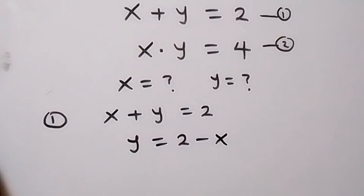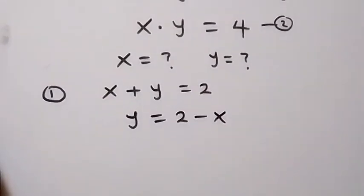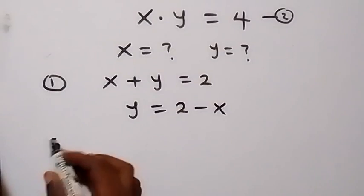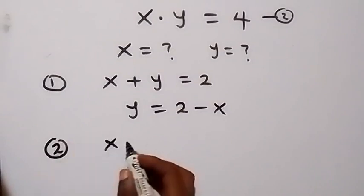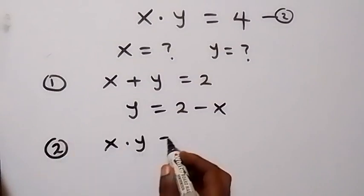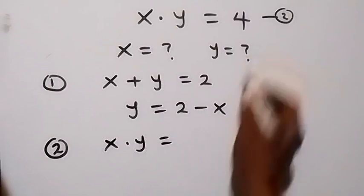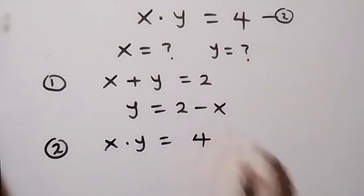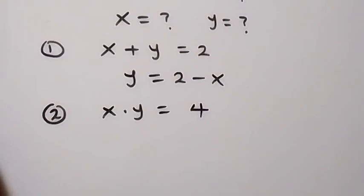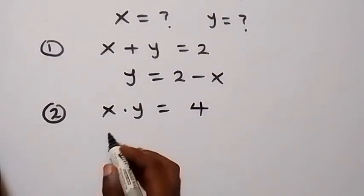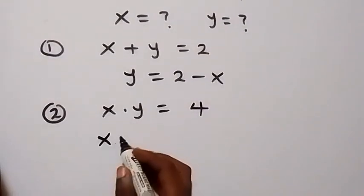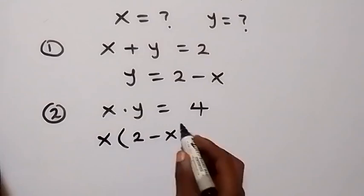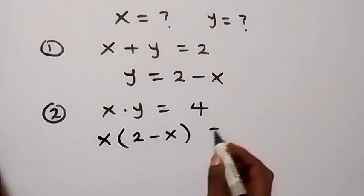Then we can substitute this in equation 2. From equation 2, we have x times y equals to 4. Then here, we have y to be 2 minus x, and this will become x multiplied by 2 minus x equals to 4.